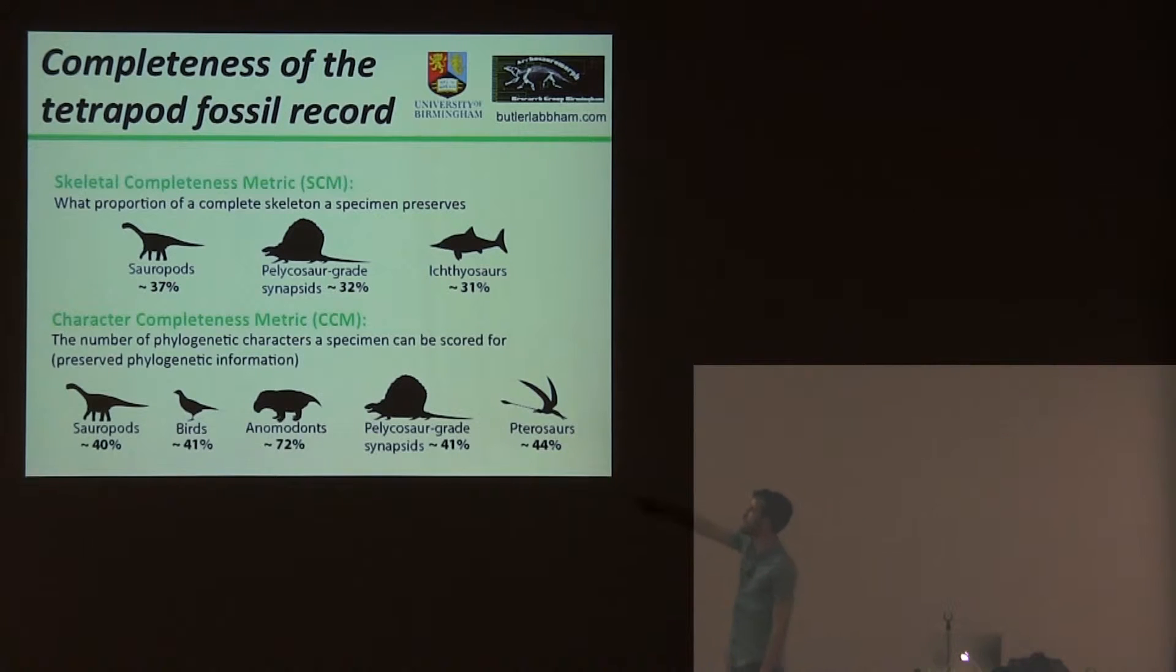As you can see, these percentages are the average completeness scores for all the fossil groups these metrics have been applied to. You can already tell there are consistent differences between the two - like 30s for the skeletal metric and around 70s for the character metric. This is because of the different approaches these metrics take to quantify the tetrapod fossil record.